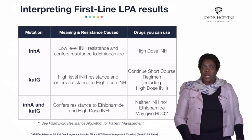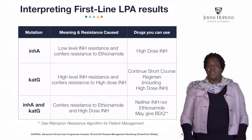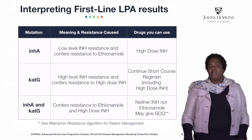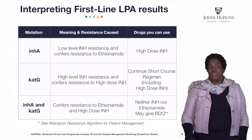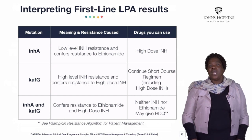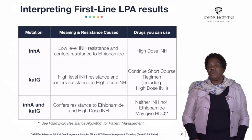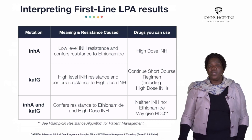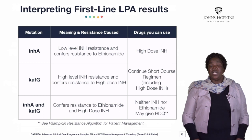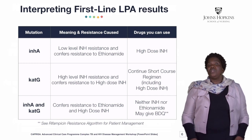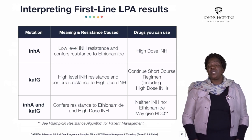Very important on this: interpretation of baseline LPA results. The results will show us an inhA mutation, meaning that this patient is also resistant to ethionamide. This client is going to be initiated on high-dose isoniazid with other drugs of the standard short-course regimen, but you will not use ethionamide. But if the client is having a katG mutation, we are still going to be using high-dose isoniazid despite the patient being resistant to isoniazid.